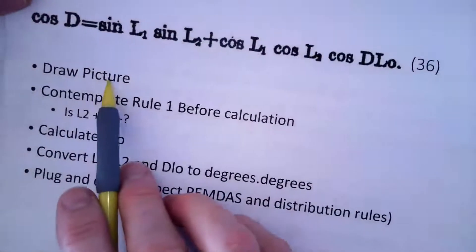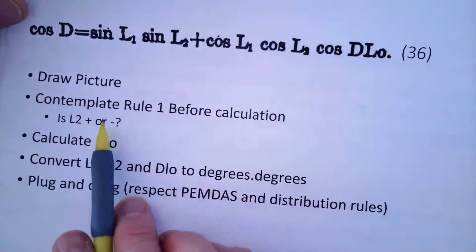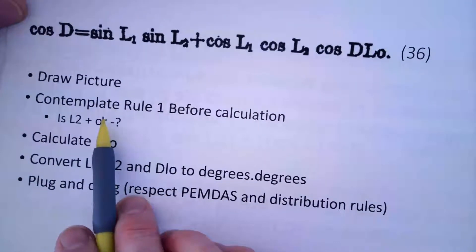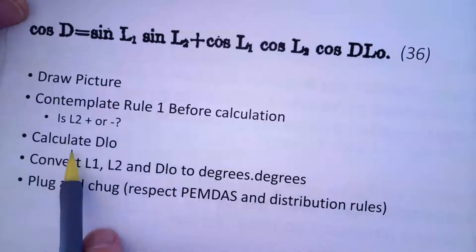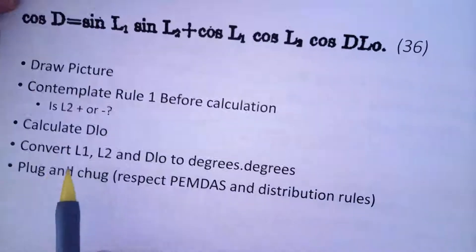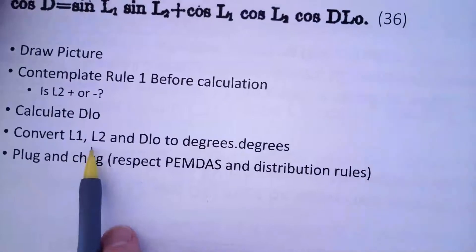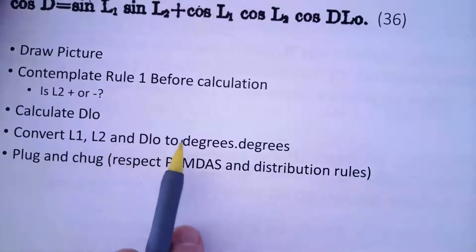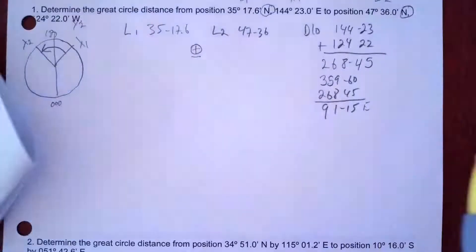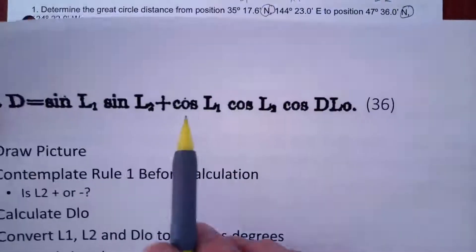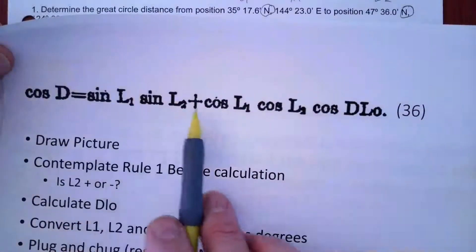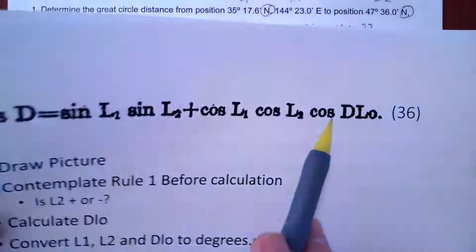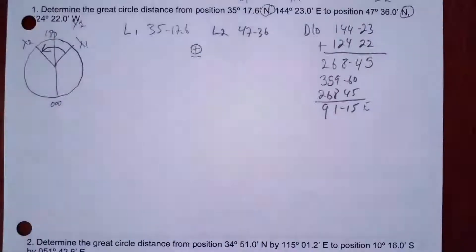So I've drawn my picture, contemplated rule 2 about L2, and calculated my D-low. Now I'm going to convert L1, L2, and D-low to degrees decimal, because I'm going to be using this formula and it's full of trig functions — I've got to stick degrees into those.